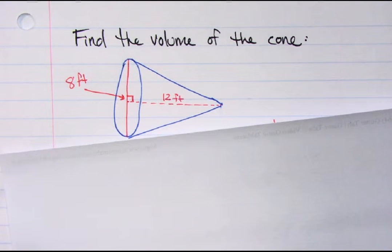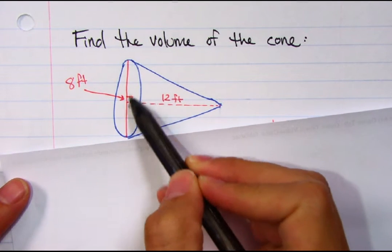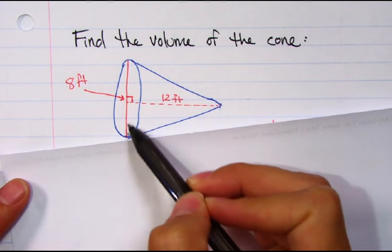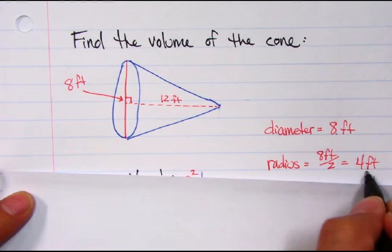Now we're going to go sideways here. Find the volume of this cone. I tried to throw you off here. I gave you a diameter, all the way across this circle. So remember, if the diameter is 8 feet, that means the radius is going to be half of that, which is 4 feet.